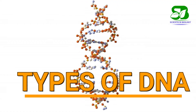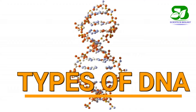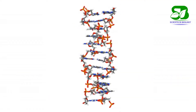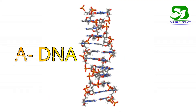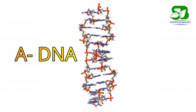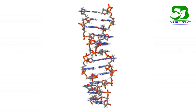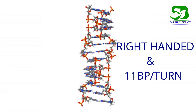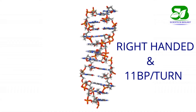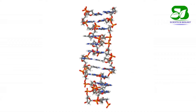There are three types of DNA. A-DNA, which is right-handed and has 11 base pairs in each turn.